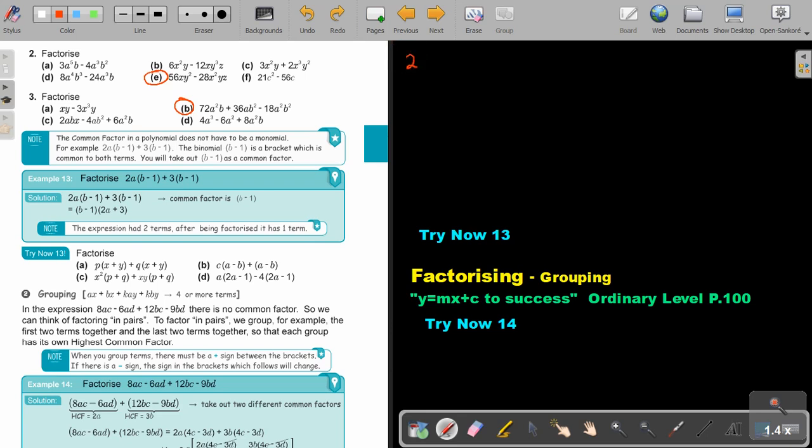If I look at number 2E. So, it's 56XY squared minus 28X squared YZ. I just want to show you. If you really hope you are having the biggest number, just take this. So, if I say 56 divided by 2, I will get 28. Divide 2, 14. Divide 2, 7. 7, 1. So, this is going to be 2 to the power of 3 times 7. If I do the same of 28, 2, 14, 2, 7, 7, 1. So, it's going to be 2 to the power of 2 times 7.